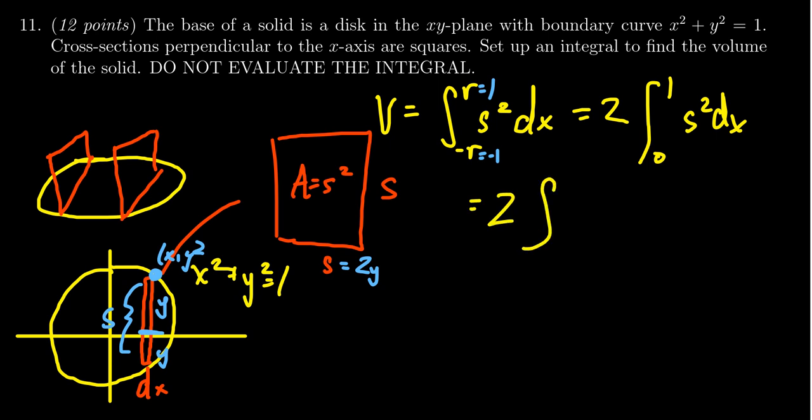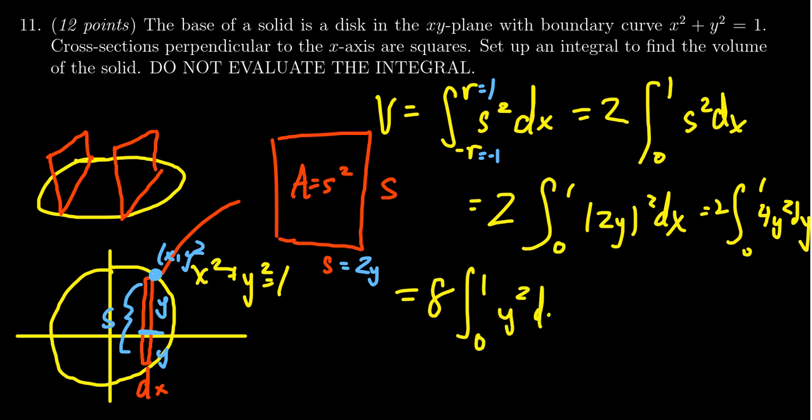So if we plug that into our integral, we end up with two times the integral from zero to one of two y squared dx, which is the same thing as two times the integral of four y squared dx from zero to one. You can combine the two and the four together to form an eight. So eight times the integral from zero to one of y squared dx.